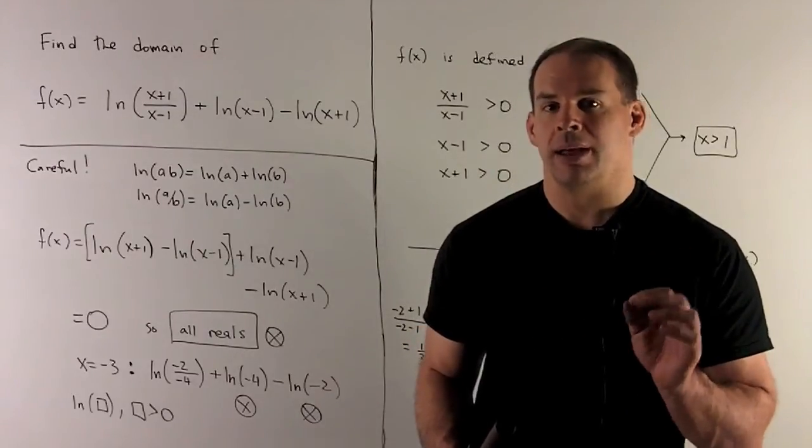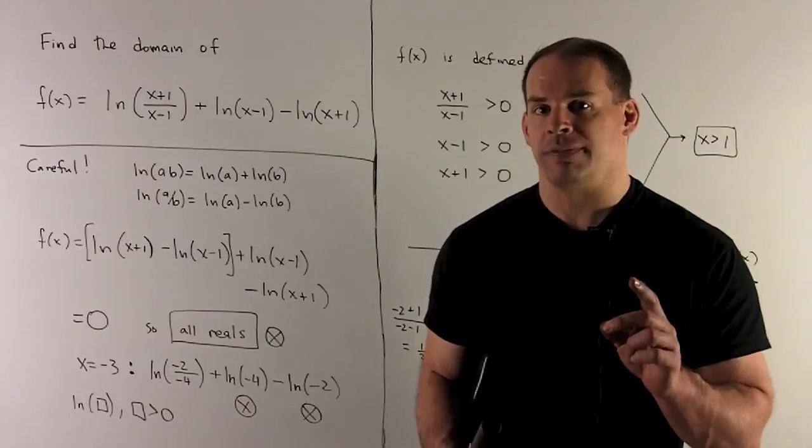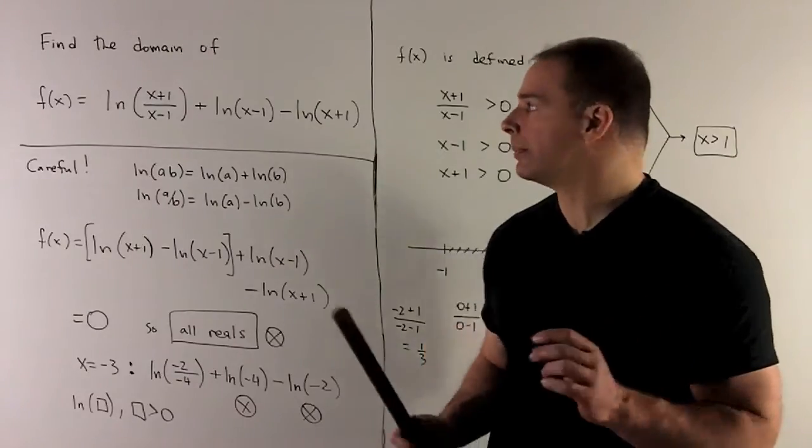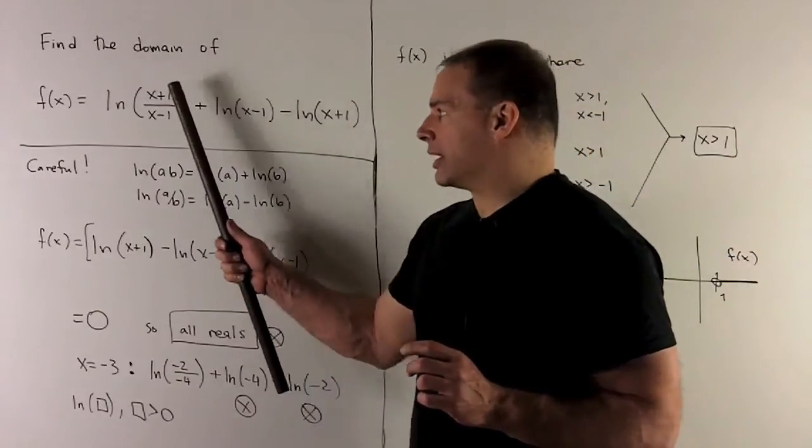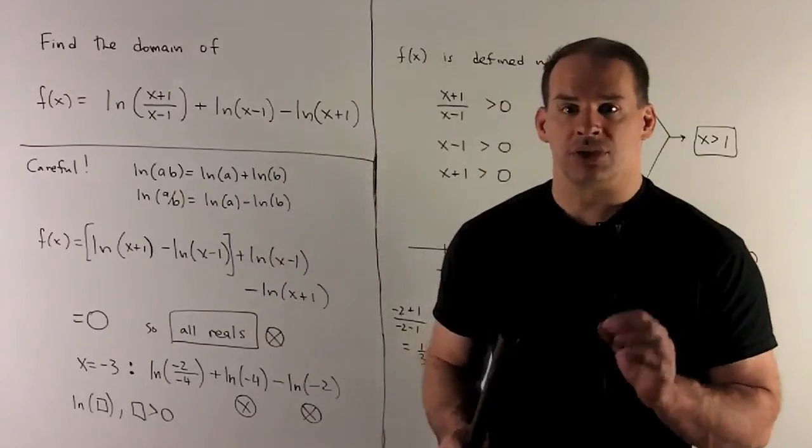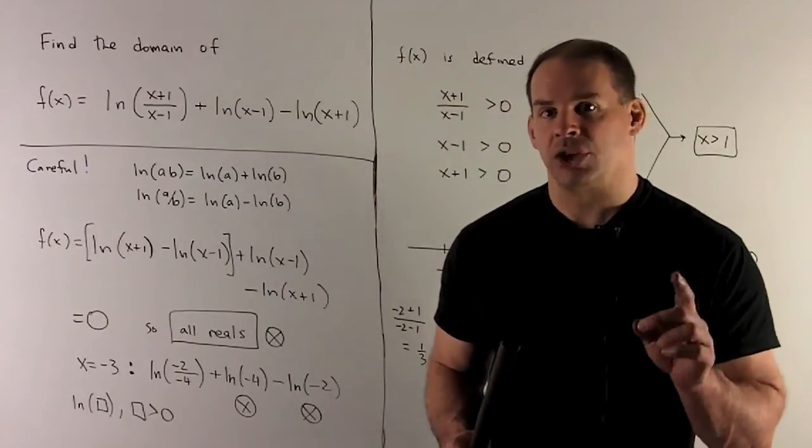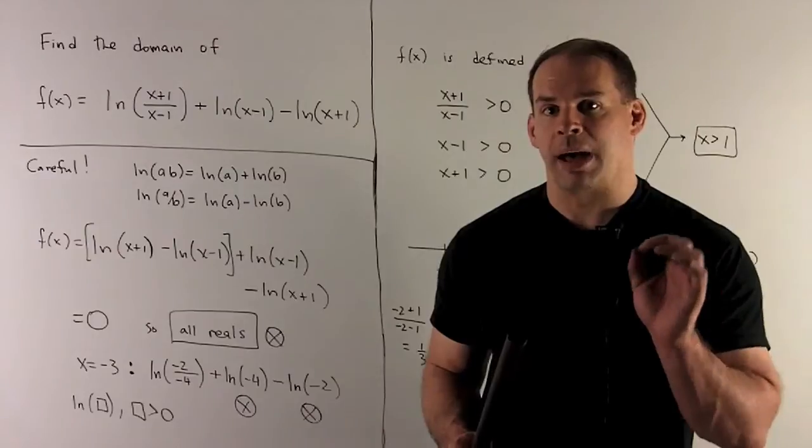But if you try to put in minus 3 into the original function, let's see what happens. I'm going to have -2 over -4, so it's going to be natural log of a half. That's good. You're allowed to take natural log of positive numbers.